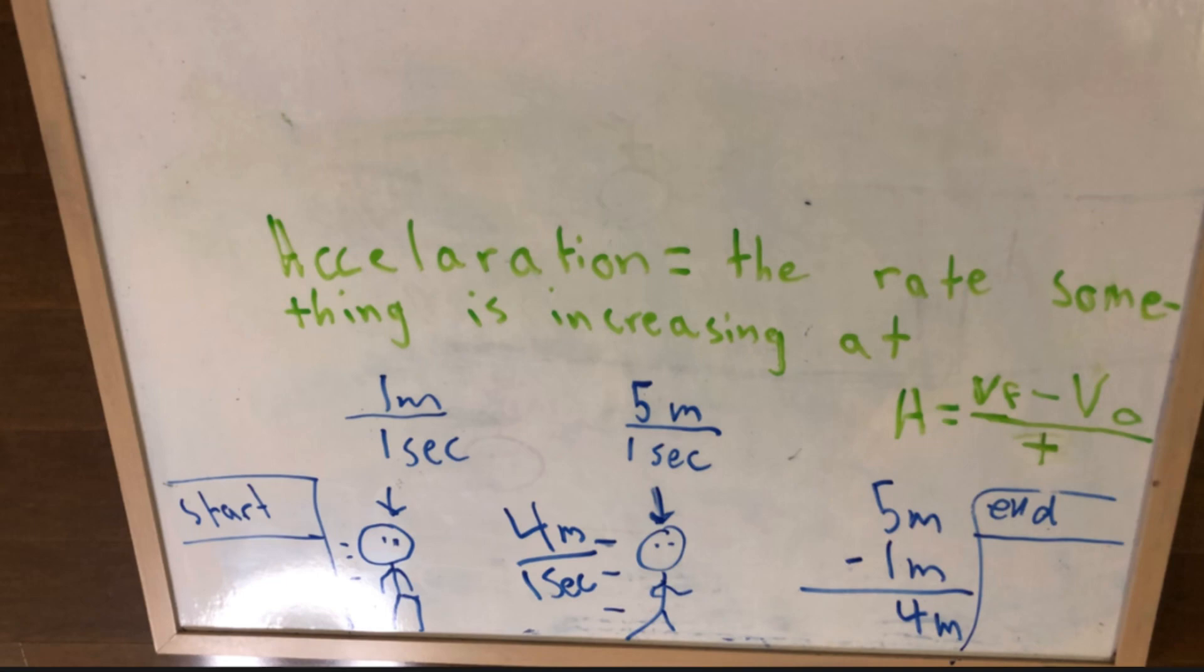For example, if you're traveling at 1 meter a second and your final velocity will be 5 meters a second, then you take 5 meters minus 1 meter to get 4 meters. Then you put that 4 meters over the time it took to get from 1 meter a second to 5 meters a second.